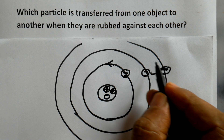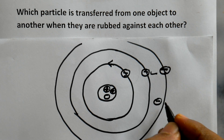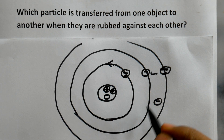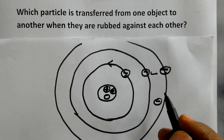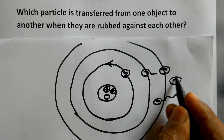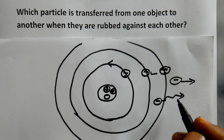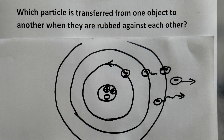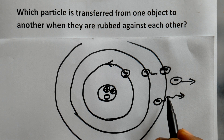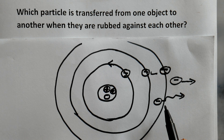When two objects are rubbed against each other, these outer electrons are transferred. In addition, there are some electrons that are not taking part in any circular motion or bonding — they move freely from one atom to another. They are called free electrons, and these free electrons may also be transferred from one object to another when they are rubbed against each other. So electrons are the basic particles transferred when two objects are rubbed together.